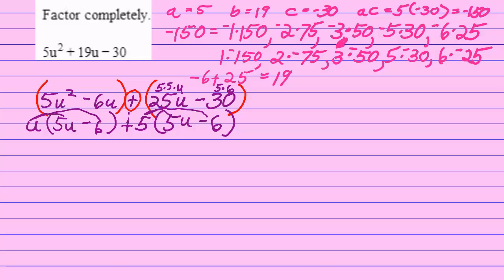Now as I look at the entire polynomial that I've created here, the factored version of it, I see that 5u minus 6 matches 5u minus 6. That means that 5u minus 6 is the GCF of the entire polynomial. And when I write the leftovers, I'll have u plus 5.